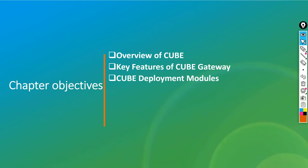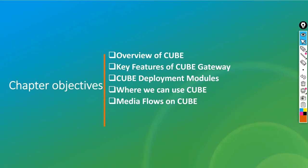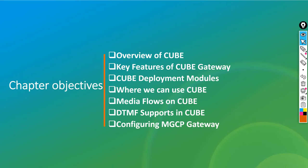Then CUBE deployment modules — where we can use the CUBE — next media flows on the CUBE, how many different media flows we have once the call is established, then DTMF supports in the CUBE, what different types of DTMF supports. Note: this slide says 'configuring MGCP gateway' but it should say 'configuring the CUBE gateway' — that's a typo error, it will be corrected next time.